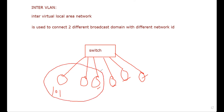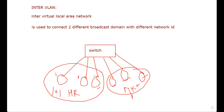With VLAN, we break the broadcast domain. For example, three PCs belong to the HR department and three PCs belong to the Marketing department, all with IP addresses in the 10.0.0.x range. The company requires HR PCs not to be able to ping Marketing PCs, so we used VLAN number 2 and VLAN number 3.